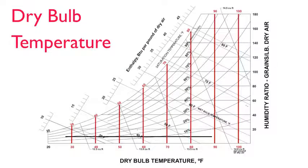Dry bulb temperature runs along the X axis and is indicated by the evenly spaced vertical red lines.